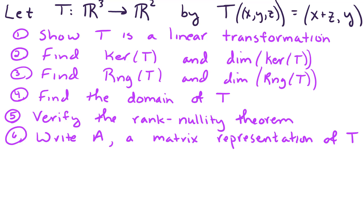Hello, in this example we want to examine a transformation which maps from R³ to R² via T(x,y,z) equals x plus z in the first component, y in the second component. We want to show that T is a linear transformation, find the kernel and range as well as the dimension of those subspaces, find the domain of T, verify the rank nullity theorem, and lastly write A, a matrix representation of T.